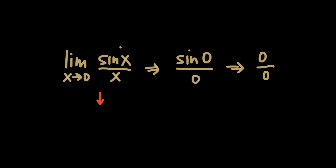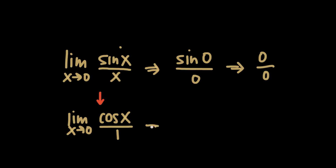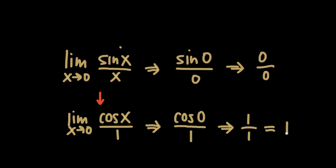So we can try L'Hôpital's rule. Instead of working with the original function sine of x over x, we'll take the derivative of both the numerator and the denominator. The numerator is sine of x, and the derivative of sine of x is cosine of x. We also have the denominator as x, and the derivative of x is one. So when we apply L'Hôpital's rule, instead of taking the limit as x goes to zero of sine of x over x, instead we take the limit as x goes to zero of cosine of x over one. Now we go back to substitution: we plug in x equals zero and get cosine of zero over one. Cosine of zero is one, so our fraction simplifies to one over one, and the value of the limit is one. So the limit as x goes to zero of sine of x over x is one.